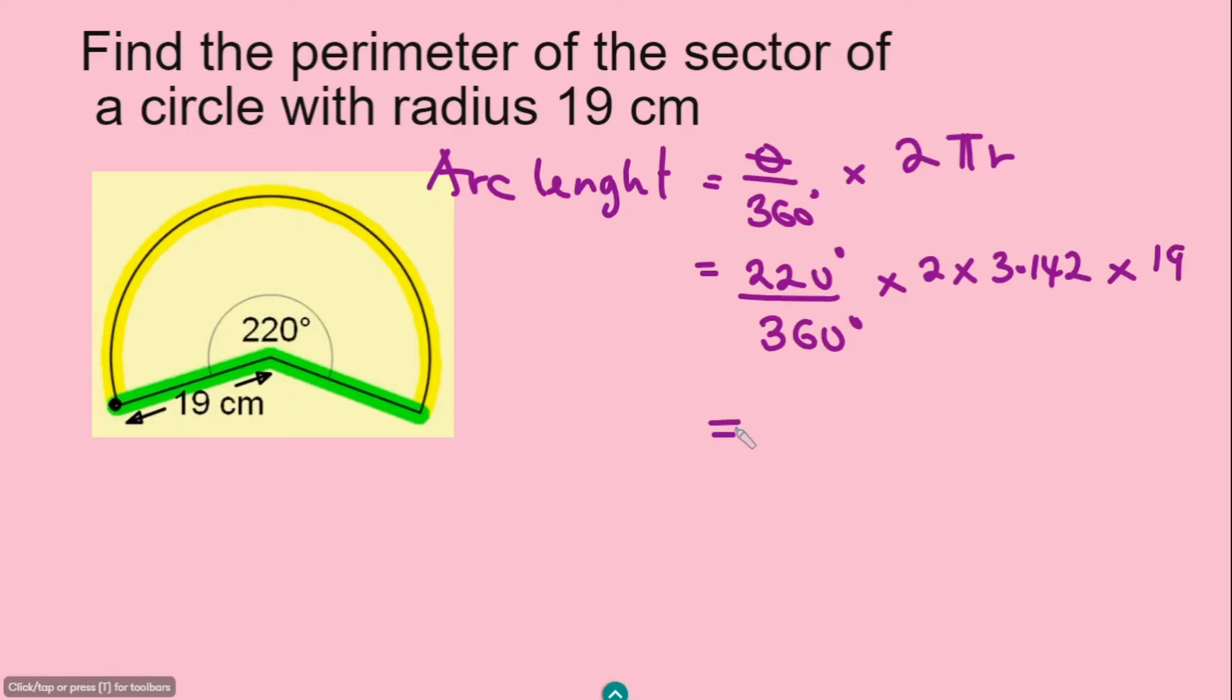And now if you work this out with your calculator, you're going to have 72.9642 centimeters. And because it's a distance around here, it's going to be in centimeters. And now to find the perimeter, the perimeter becomes this curve part which we have already calculated and then adding to the two radii.